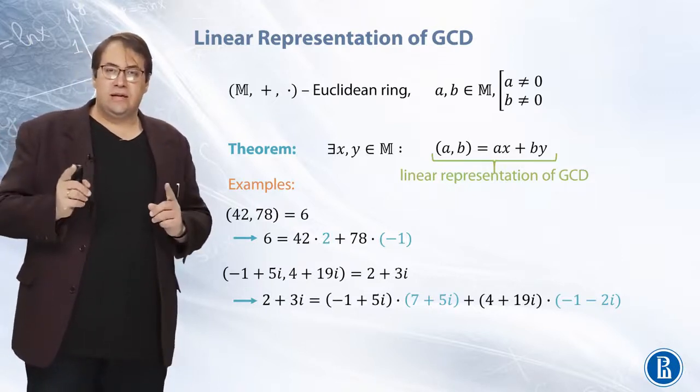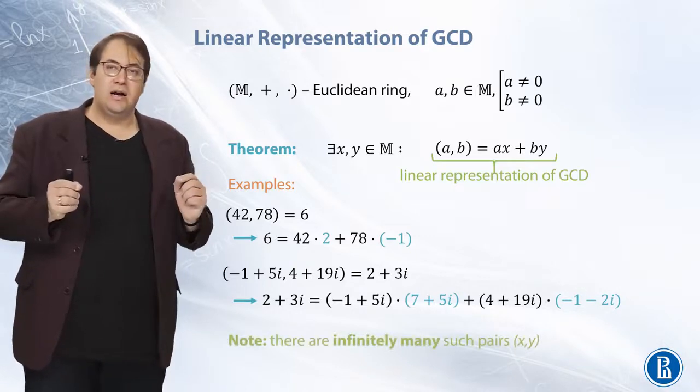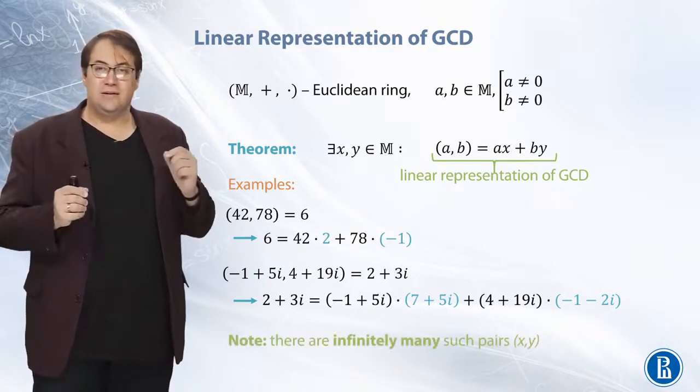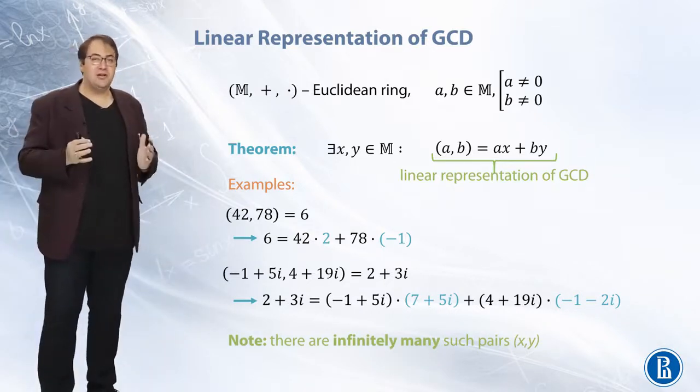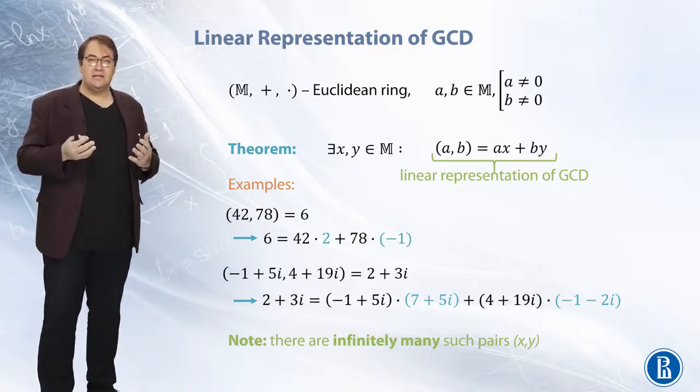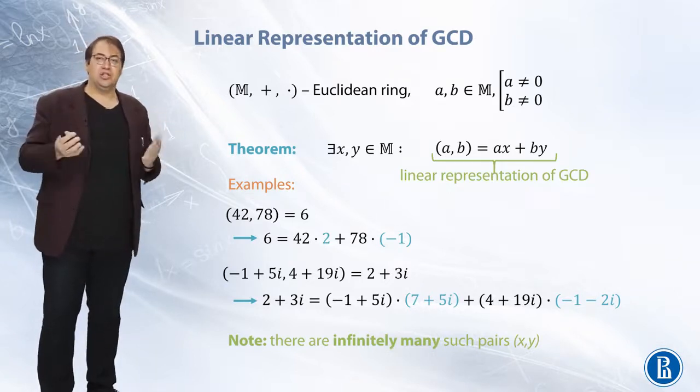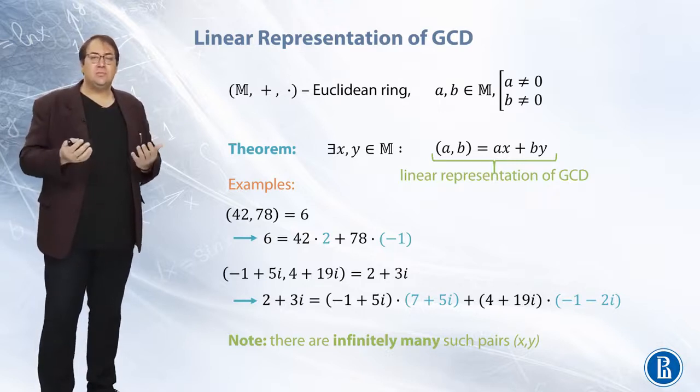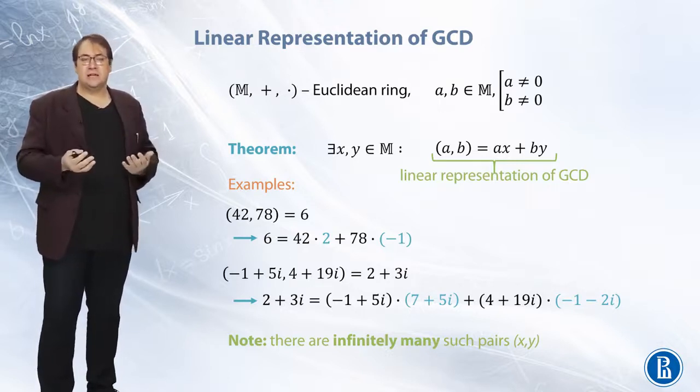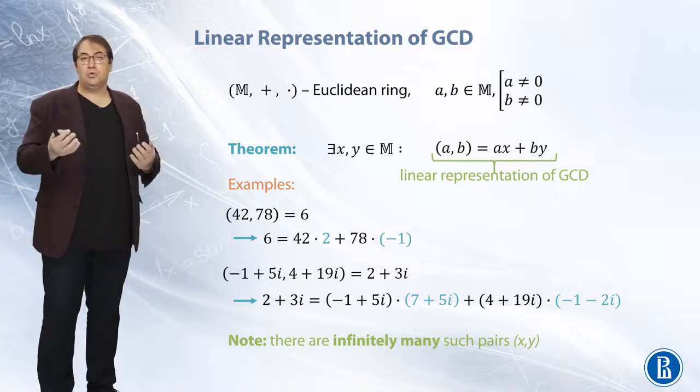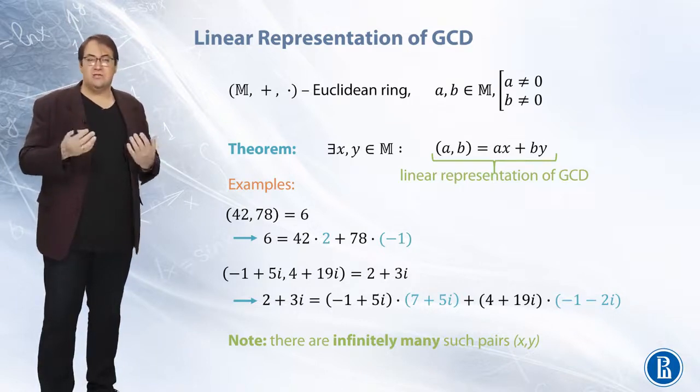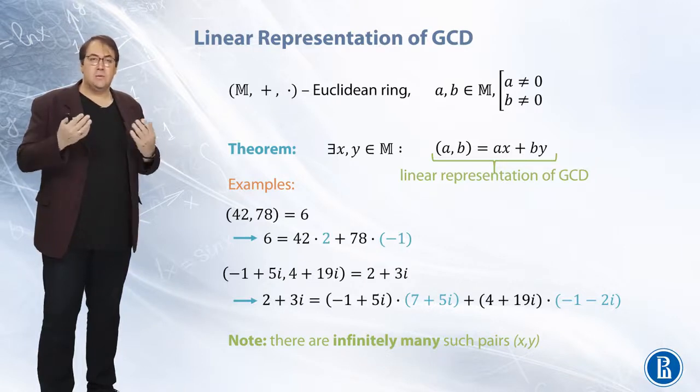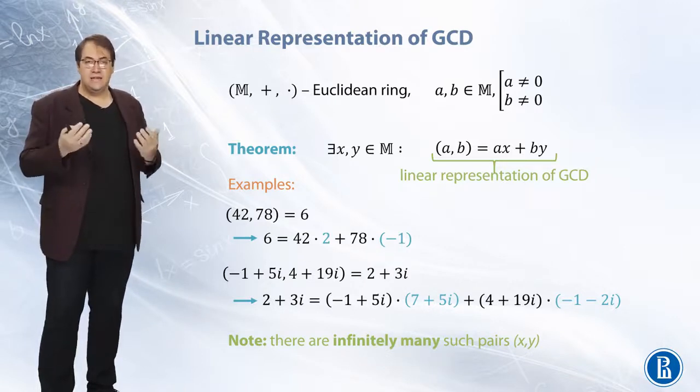But note that these x and y are not uniquely defined. What's more, there are infinitely many such pairs x and y that satisfy this linear representation condition. It is actually easy to prove, so I leave it to you as an exercise. But in some future videos and topics we will learn how to find all such pairs of x and y, and we will also see why there are always infinitely many of them.